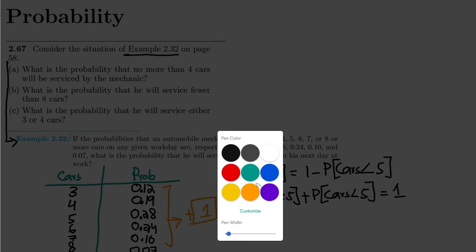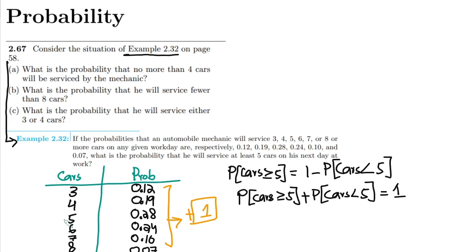Here you can very easily see that the cars greater or equal to 5 are here while the cars less than 5 are here. This is the overall which is 1.